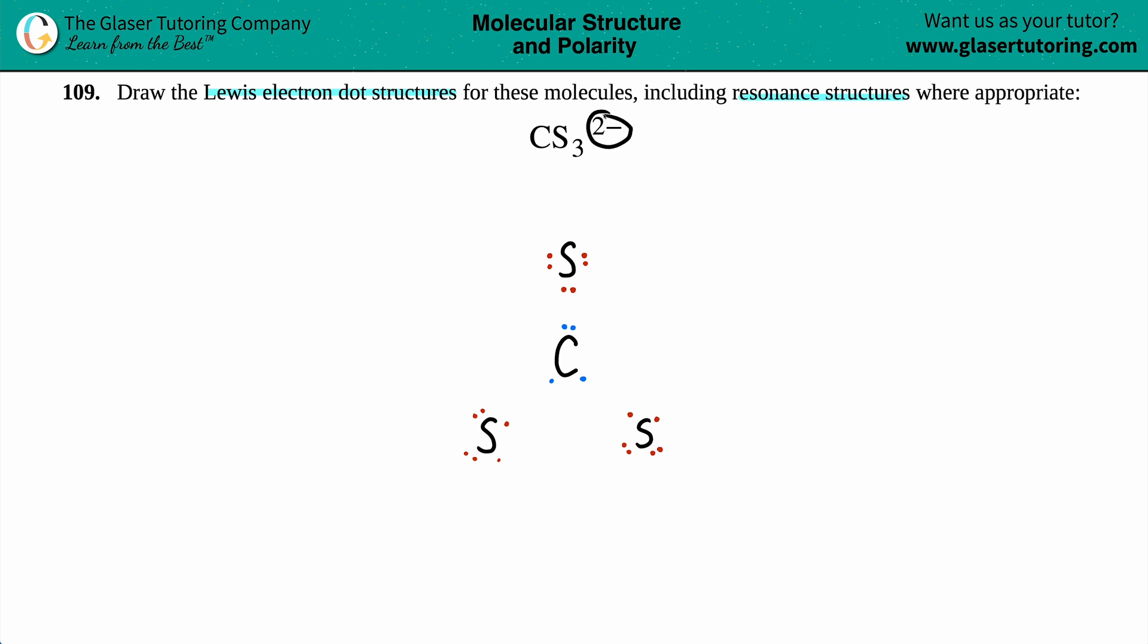Now, this two minus charge means that the molecule has gained two electrons. Remember, if you're more negative, you are gaining electrons because electrons are negative. A positive charge means you lost electrons. A negative charge means you gained more. Whenever you're gaining electrons, the more electronegative element will have a higher probability of gaining those electrons. So I'm going to be fair and put one dot on one of the sulfurs and another dot on the other sulfur.